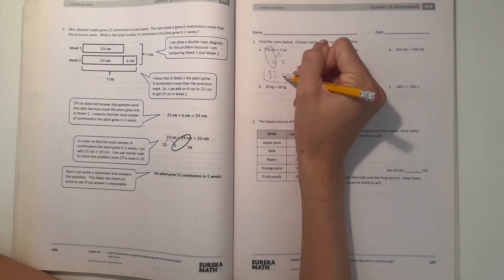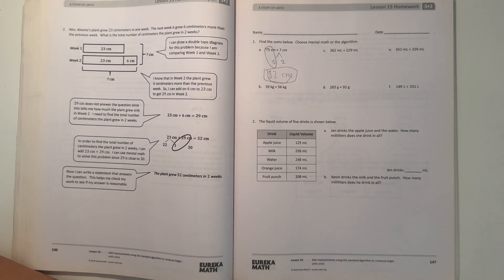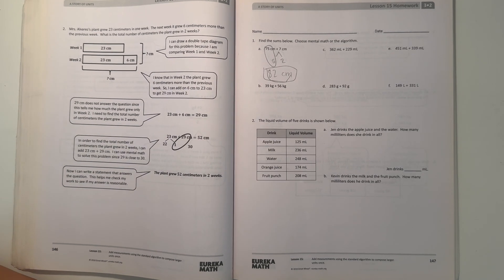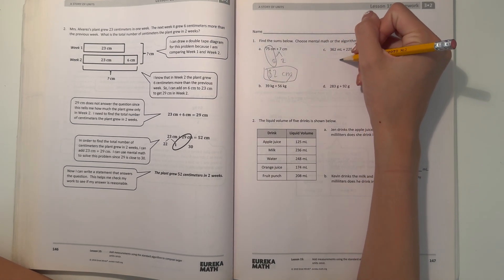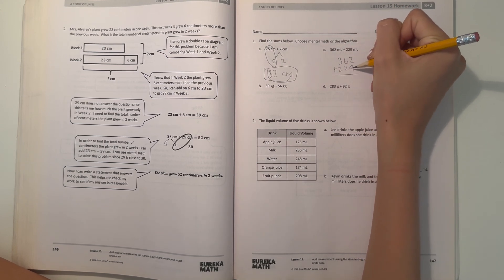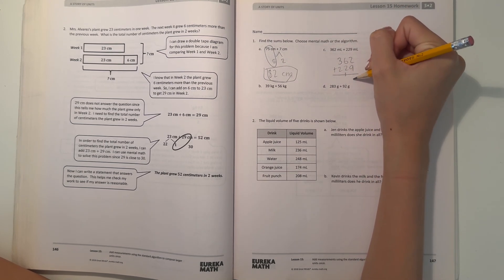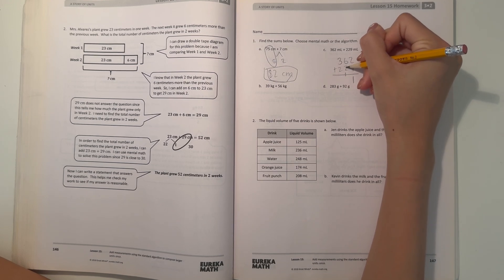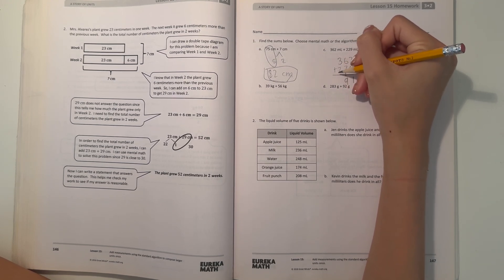Part C, 362 plus 229 in milliliters. Let's do the algorithm here. 2 plus 9 is 11, so carry the 1. 6 plus 2 is 8, plus 1 is 9, and 3 plus 2 is 5.